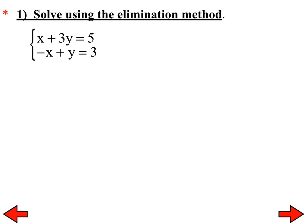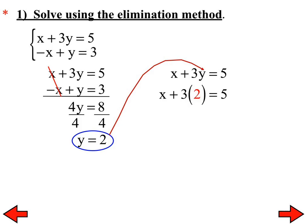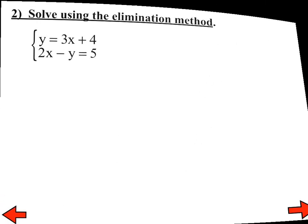I want everybody to try number one. Rewriting the problem — without doing any work, the X's are eliminated by adding straight down. That gives 4Y equals 8, a very simple one-step equation to solve, so Y equals 2. Substituting that back into the first equation — you could use the second equation and we'd end up with the same thing — gives X equals negative 1. So the solution is negative 1 comma 2. You should mentally check.